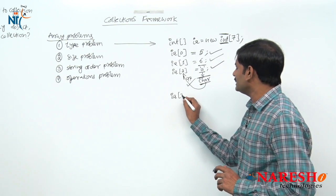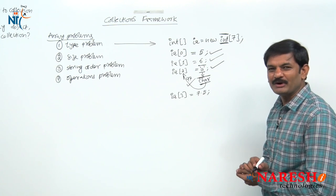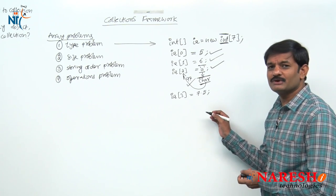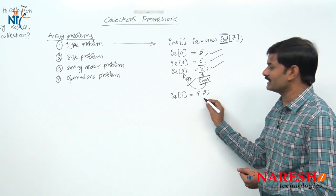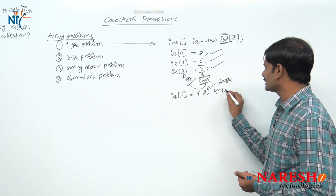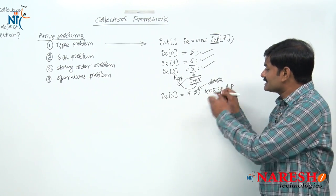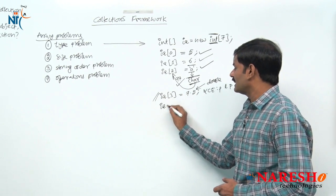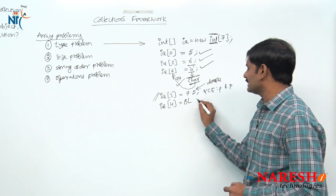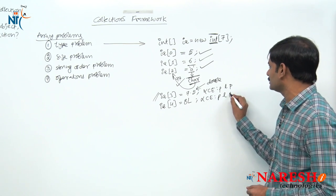Now `ia[3] = 7.5` — allowed or not? 7.5 is of type double. Double range is greater than int — it is a compile-time error. Compiler will throw: 'possible loss of precision'. Then `ia[4] = 8L` — 8L means long type. Long cannot be stored in int — again compile-time error: 'possible loss of precision'.